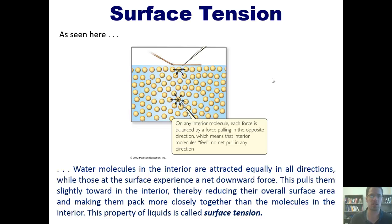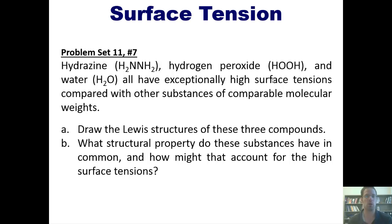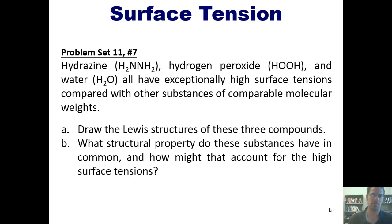This explains why the molecules at the surface have surface tension, and also takes us to a wonderful problem. Hydrazine, hydrogen peroxide, and water all have exceptionally high surface tensions compared with other substances of comparable molecular weights. First, draw the Lewis structures of these three compounds, and second, tell me what structural or intermolecular property do these substances all have in common, and how might that account for the high surface tensions in these liquids? I'm not going to do this problem for you, but invite you to do it on your own.